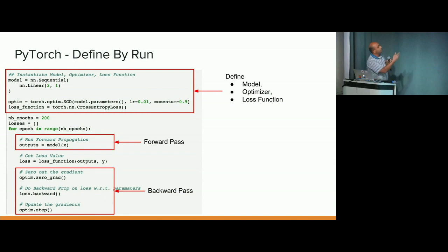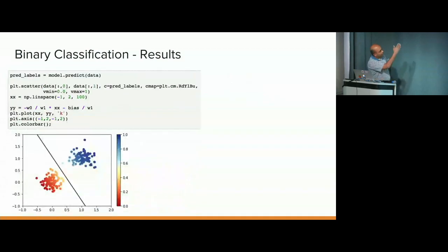All right. So, of course, all these models do an excellent job of separating, drawing this line that separates these two things. But, again, you don't need neural networks for this.